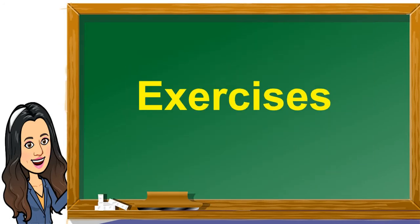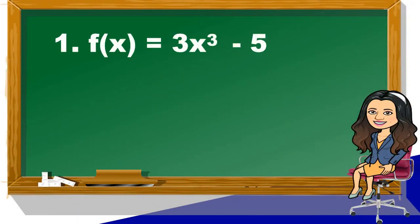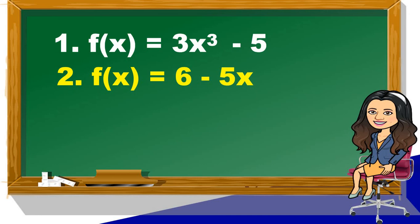Now let us perform some exercises. Let us identify whether the given equation is a polynomial function, and if it is, classify what type it is. Number 1: f(x) = 3x³ - 5. Yes, this is a polynomial function — a cubic function. Number 2: f(x) = 6 - 5x. Yes, this is a polynomial function — a linear function.